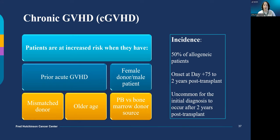Most chronic graft-versus-host disease is first detected in the first two years after transplant. If somebody comes to us with symptoms common to chronic graft-versus-host disease but they're more than two years out from transplant and have no history of chronic GVHD, we suspect other causes for those symptoms.